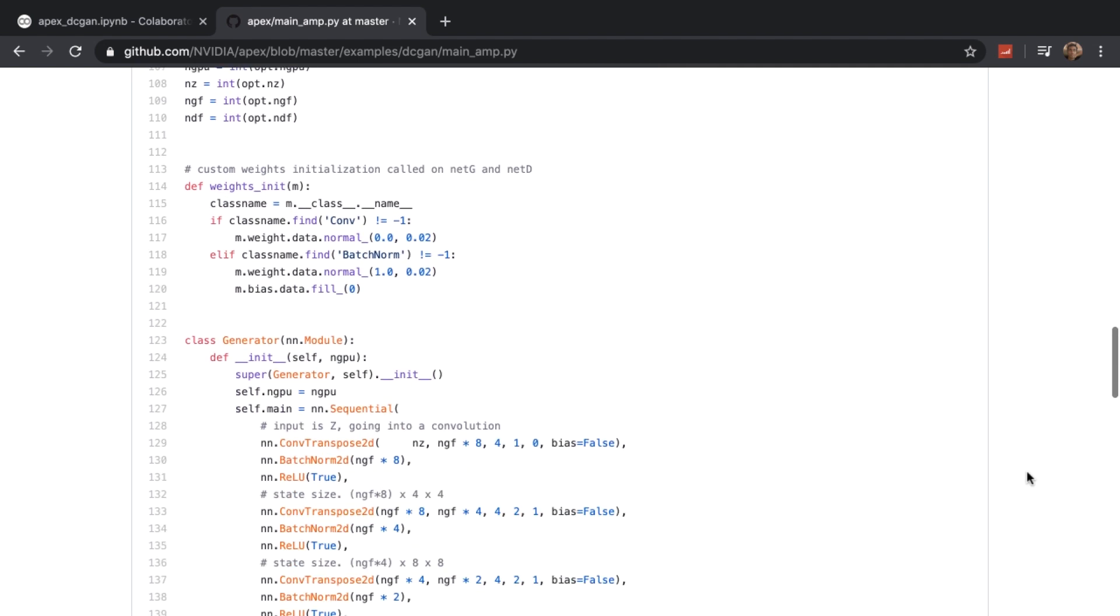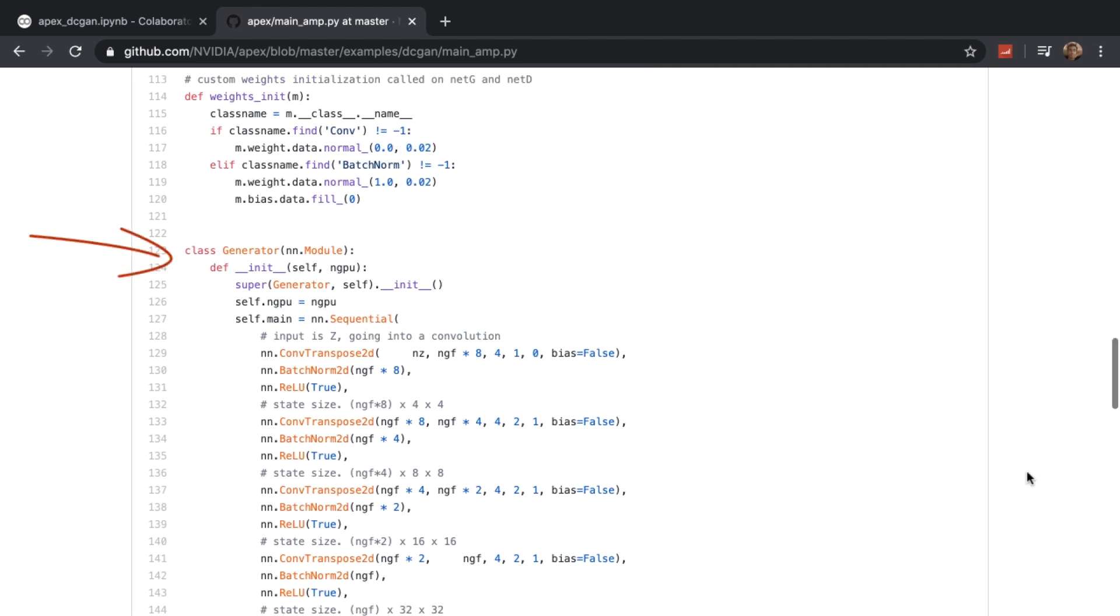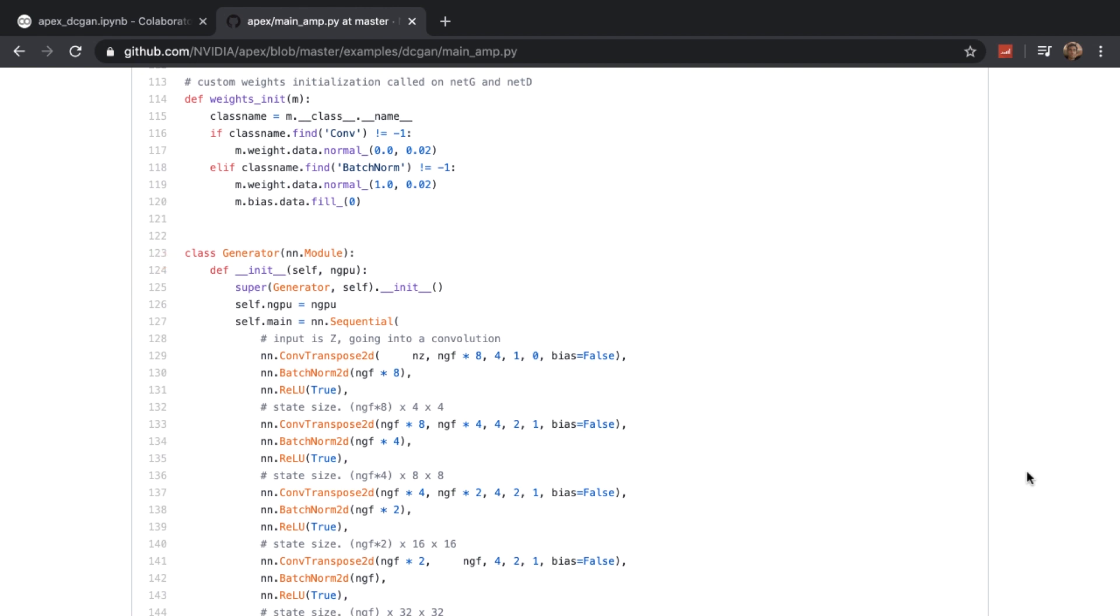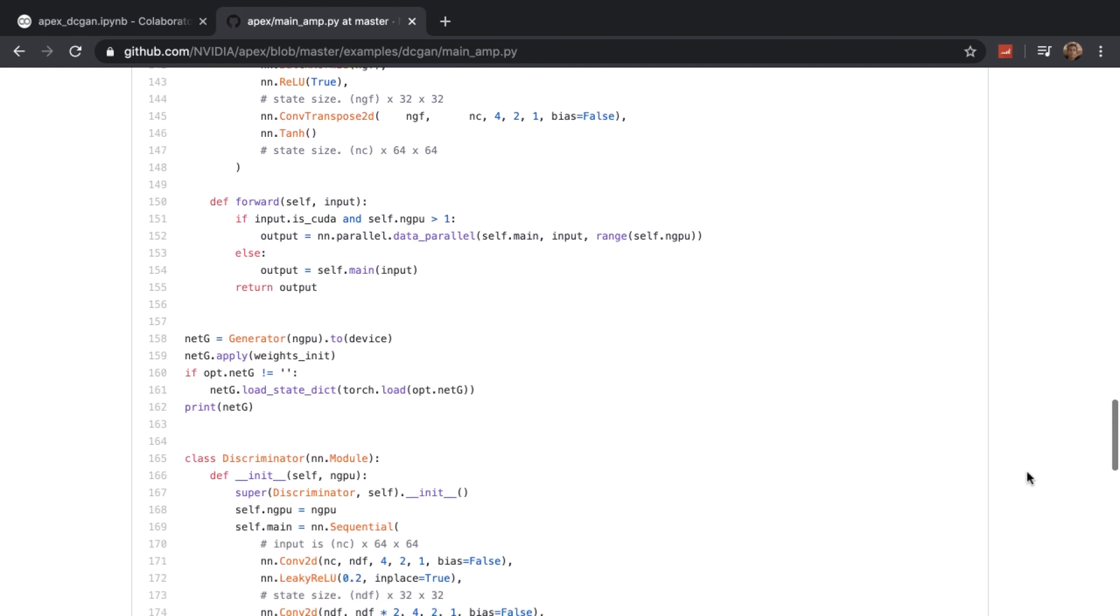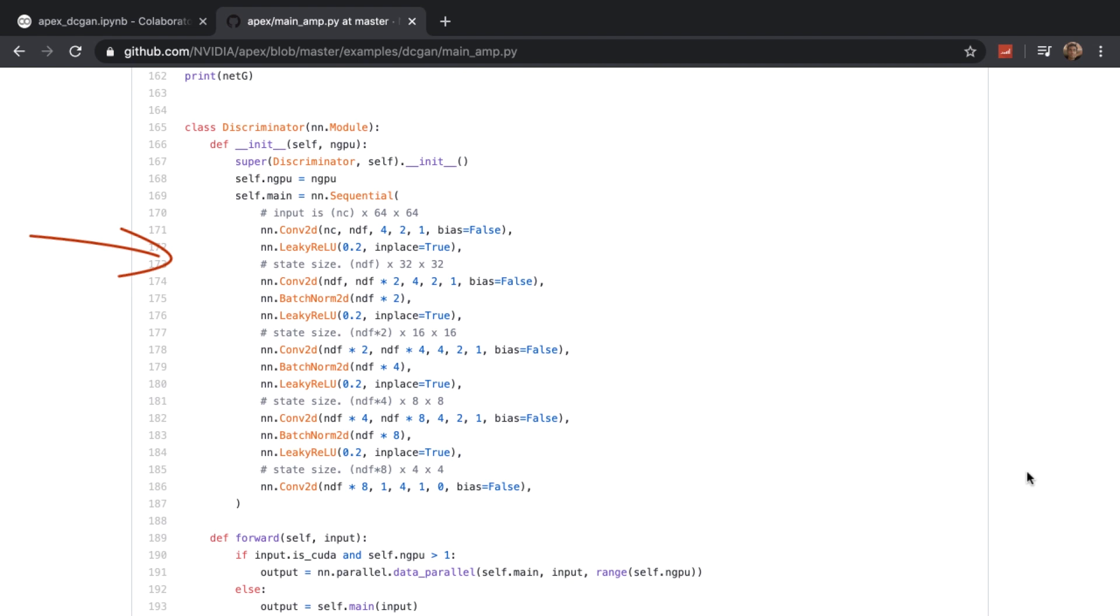Next construct the generator loss, starting with the basic architecture. This is the basic transposed convolutional neural network. The input is some noise Z and the output is a 64 by 64 colored image. And then we do the same for the discriminator architecture. This is a convolutional neural network architecture. The input is a 64 by 64 image, and the output is just whether the image is real or fake.